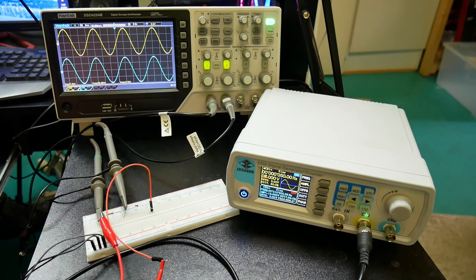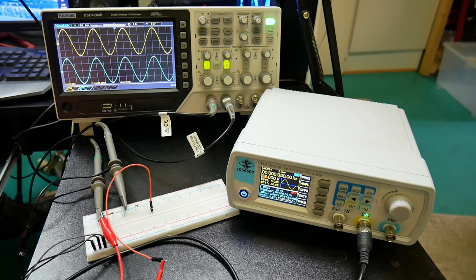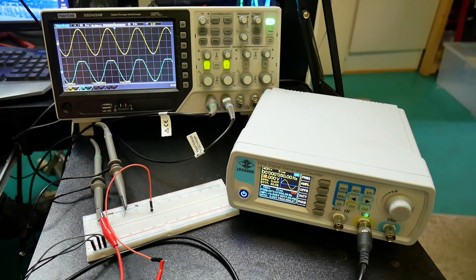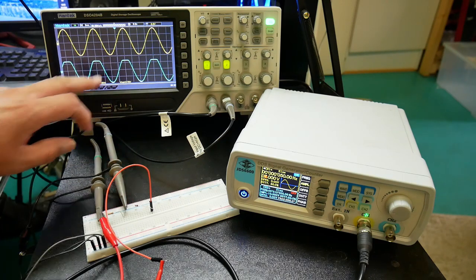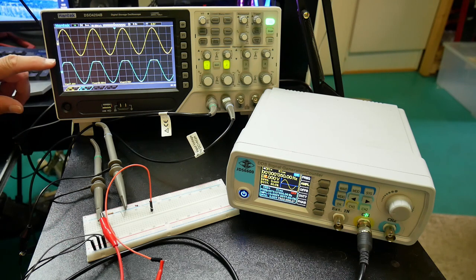And as you see nothing happens because this is peak to peak 7 volts so it's like three and a half. So if we reduce the voltage, the reference voltage. Yep, now we start seeing the diode activate and it's clamping the positive voltage. So let's put it at 2 volts just as a reference. So here now we've effectively clamped the output signal to 2 volts.